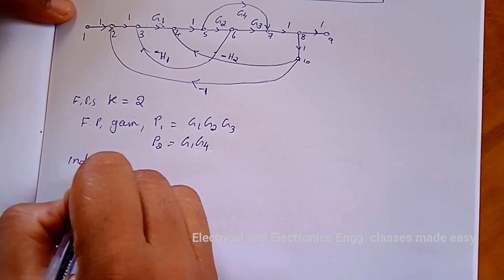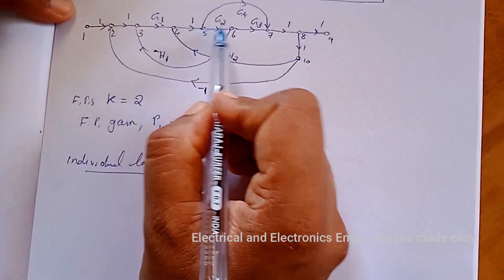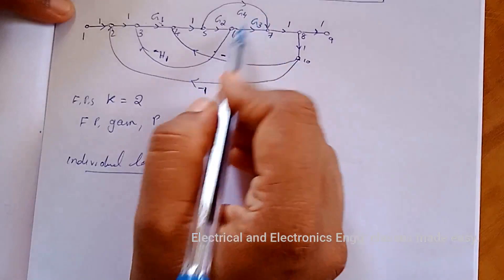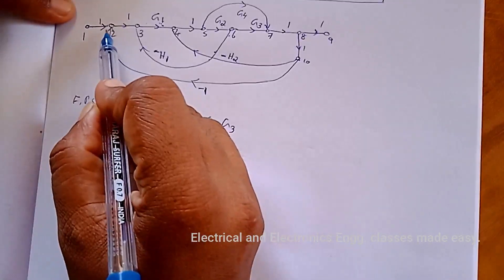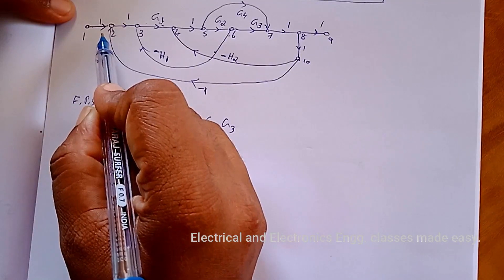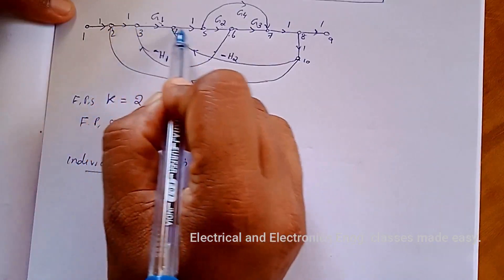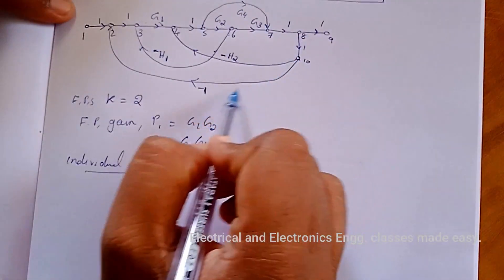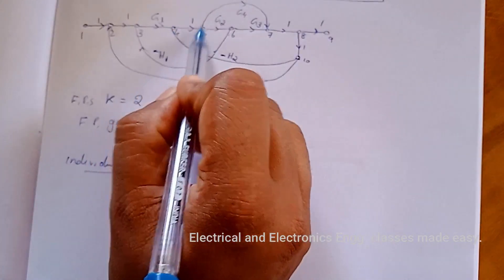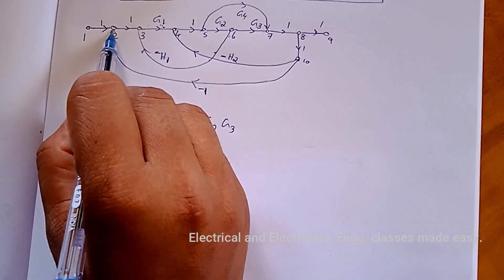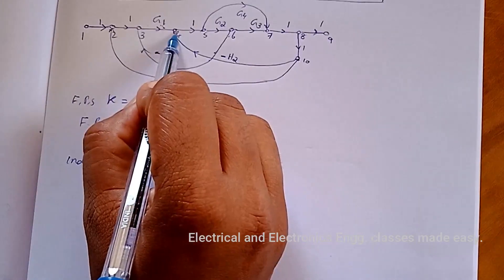Now we have to find the individual loop gains by identifying the individual loops. There are several individual loops. One loop goes from 2, 3, 4, 5, 7, 8, 10 back to 2. Another goes from 4, 5, 6, 7, 8, 10 back to 4. Also from 3, 4, 5, 6 back to 3, and from 4, 5, 6 back to 4. These are the individual loops.